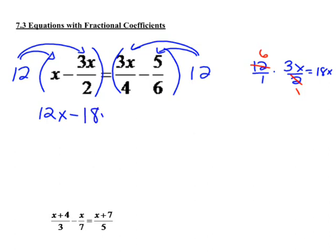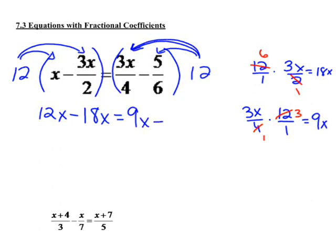So 12x minus 18x equals, now we're going to multiply the 12 times the 3x over 4. We can simplify just like before. 4 goes into 12, 3 times. And 3x times 3 is 9x. So 9x, bring down our minus sign, and now we need to do 12 times 5 sixths. All of these, you're not going to need to write them out to the side, but I'm just doing it so you can see it at least through the first time. That's 10.